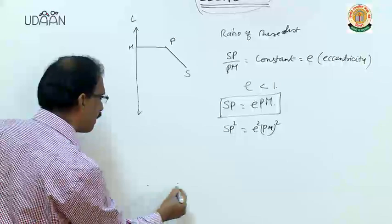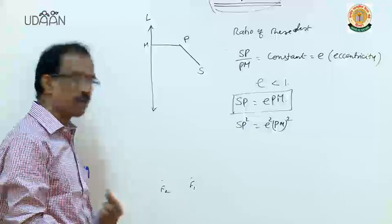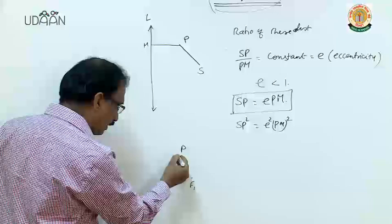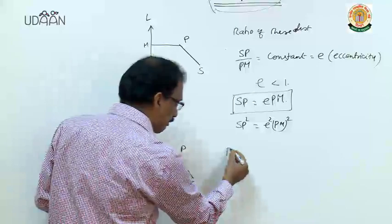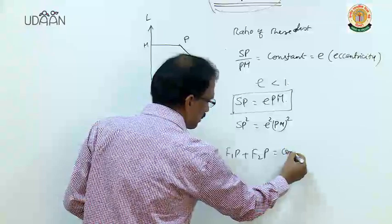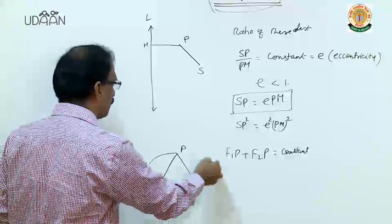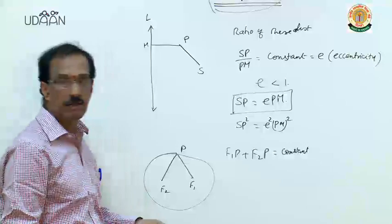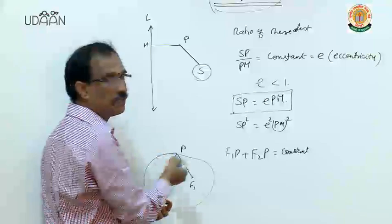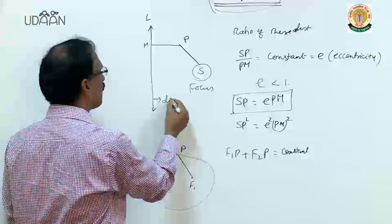The same definition can be written another way. If two fixed points F1 and F2 are there, a point is moving such that the sum of distances F1P plus F2P is a constant. Then also, the path traced will be an ellipse.